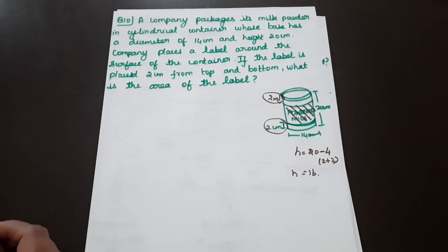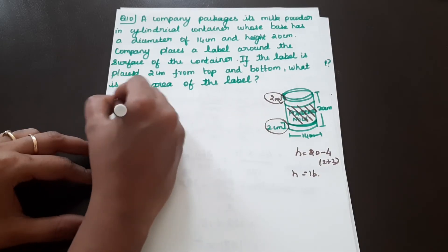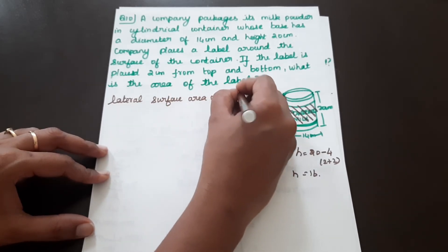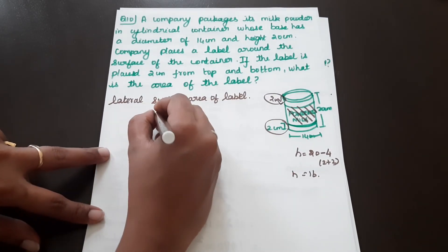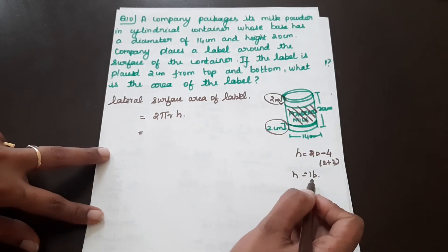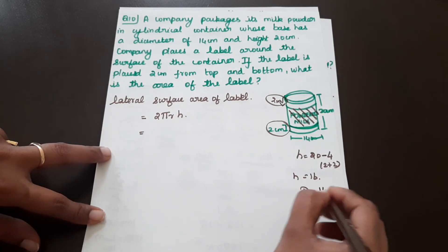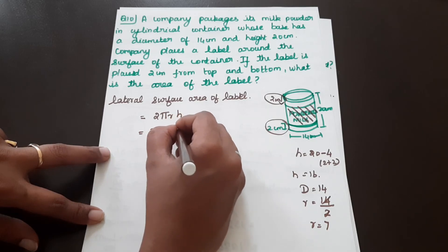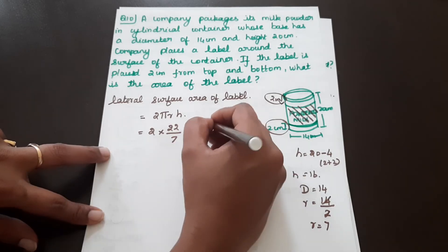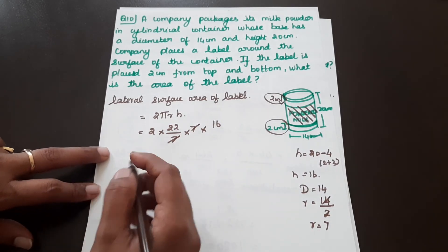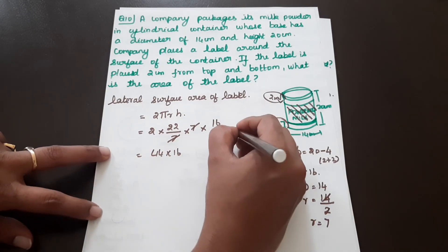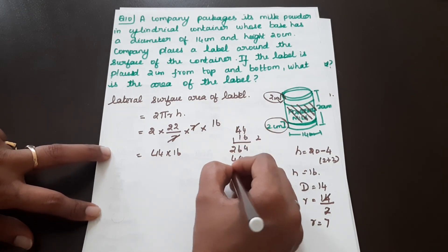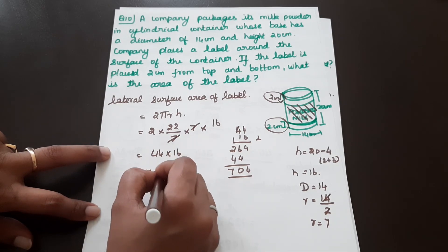Lateral surface area of the label equals 2πRH. Diameter is 14, so R equals 14 divided by 2, which is 7. Substituting: 2 into 22/7 into 7 into 16. The 7s cancel. So 2 into 22 equals 44, and 44 into 16 equals 704. The area of the label is 704 square centimeters.